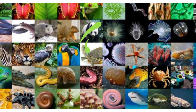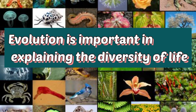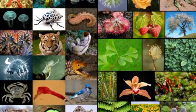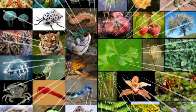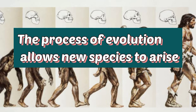Organisms continually adapt to their environments, and the diversity of environments that exist promotes a diversity of organisms to adapt to them. Evolution is important in explaining the diversity of life because it is a process that allows species to become differentiated. Changes that are useful will be passed on to future generations and may eventually lead to the rise of new species — it is in this way that evolution helps explain the diversity of life.